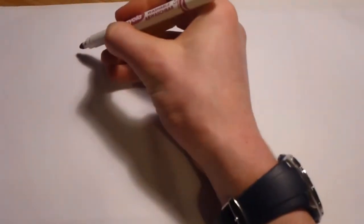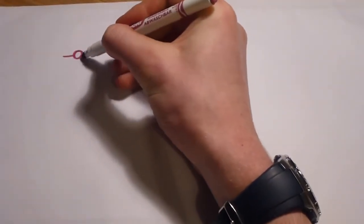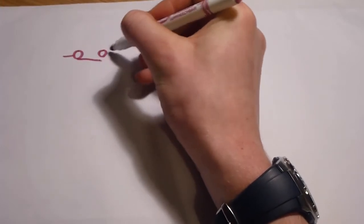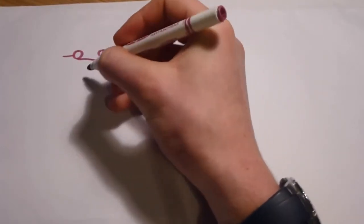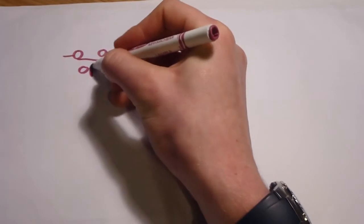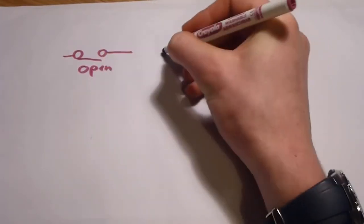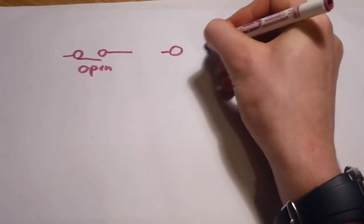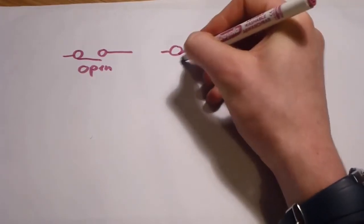We'll start with a switch. A switch can be drawn in two ways: it can be drawn here open, and this way which shows it being closed.